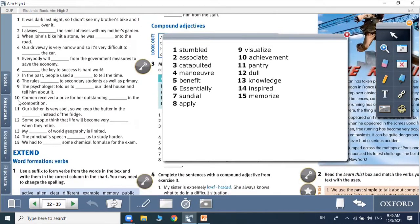Number nine, the psychologist told us to visualize our ideal house and tell him about it. Number ten, Carmen received a prize for her outstanding achievement in the competition. Number eleven, our kitchen is very cool so we keep the butter in the pantry instead of the fridge. Number twelve, some people think that life will become very dull when they retire.